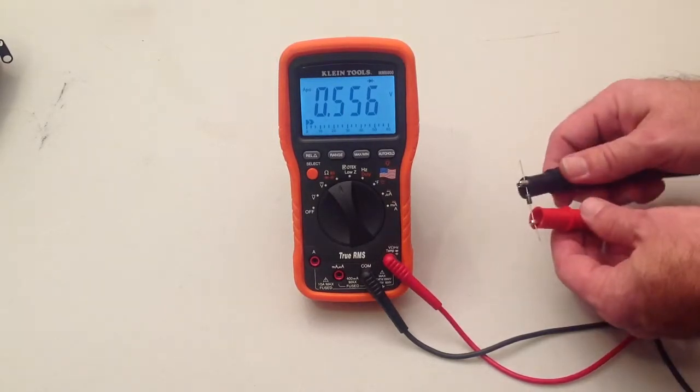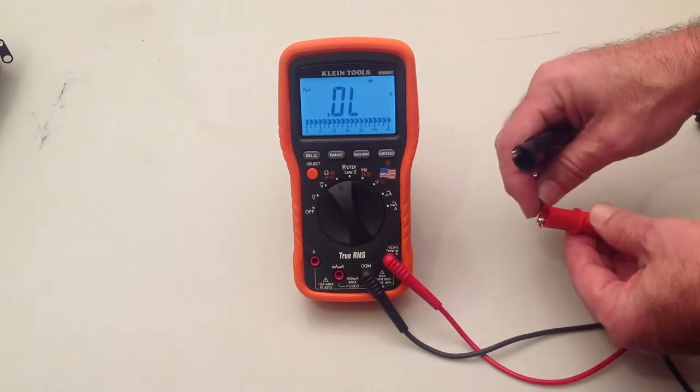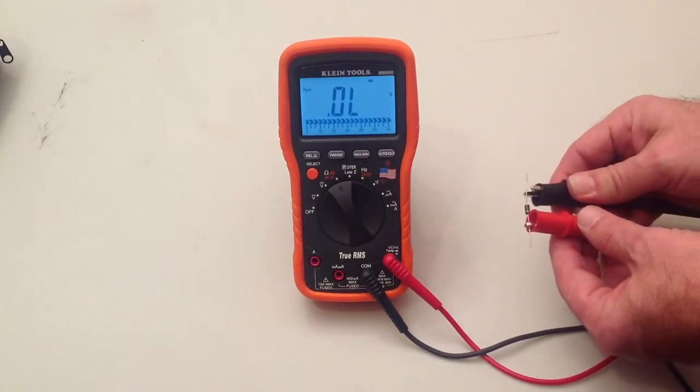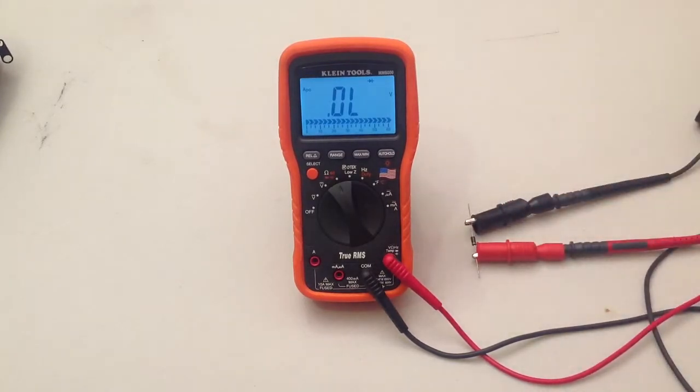If I were to take this diode and reverse the voltage, put the positive there, it's going to block that voltage, not let any voltage through, and show overload in the display.